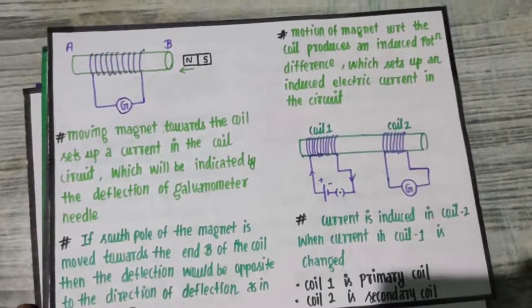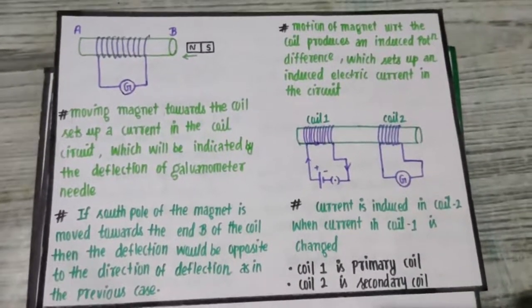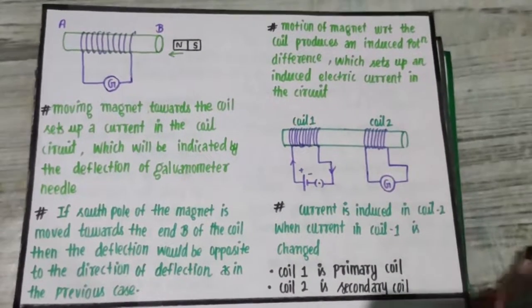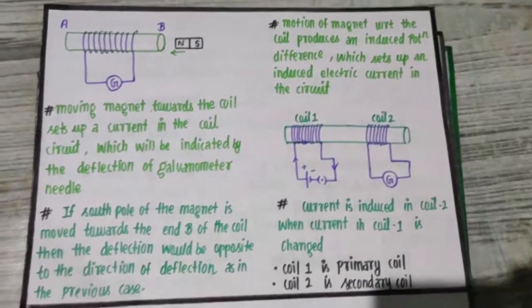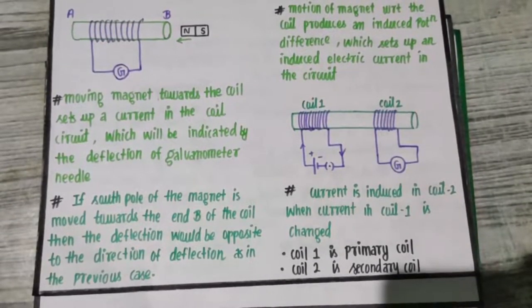Then the deflection will be opposite to the direction of the deflection as in the previous case. So just note this important point. Why is the electric current generated? Because of the induced potential difference.